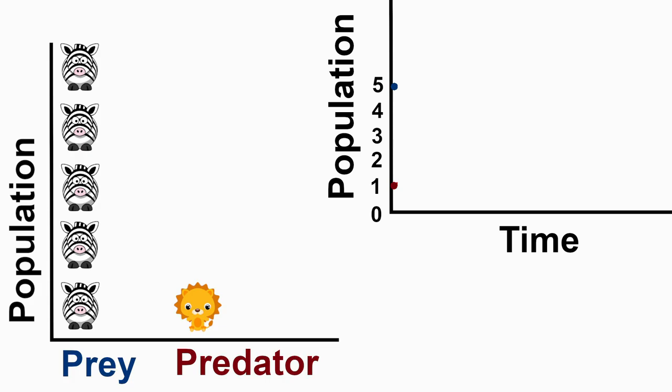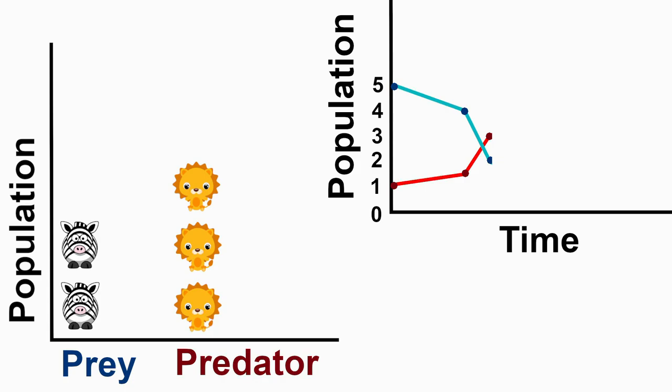The few lions easily find zebras to eat, and after several years the lion population starts increasing. Eventually, the cubs grow old enough to hunt, and there is now a large population of hungry lions. They begin to kill zebras at a higher rate, so the zebra population starts to decline. The large number of lions then quickly drives the zebra population down to extremely low levels, but some zebras are able to survive simply because the lions couldn't find them.